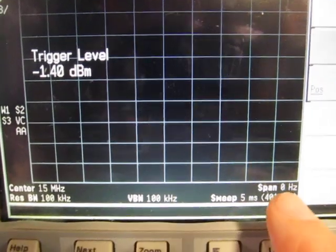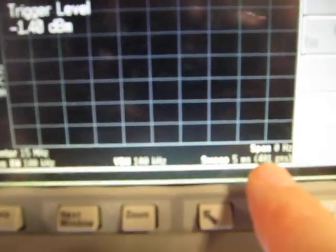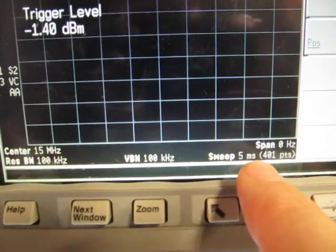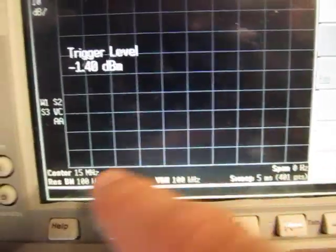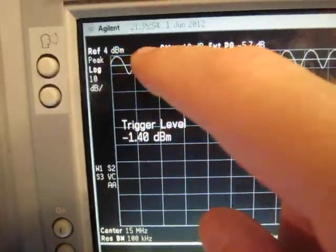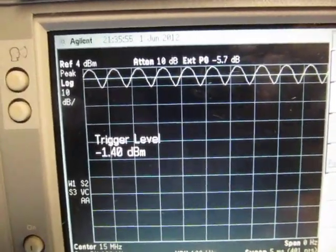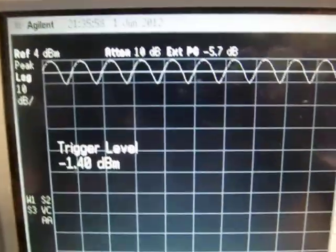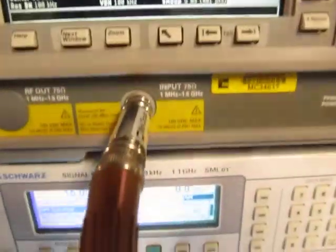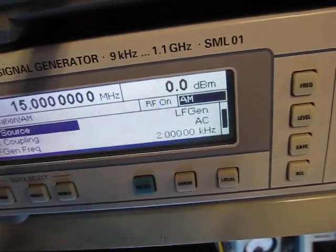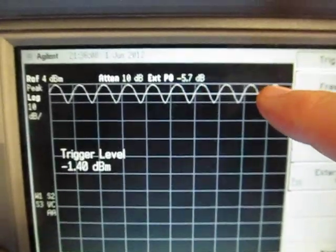The horizontal axis here is now, instead of frequency, is now time. And I've got a 5 millisecond total time here or 500 microseconds per division. Again, you can kind of see the period of that signal is at 500 microseconds. But you might look at this and say, well, that doesn't look sinusoidal. I know that the signal I'm modulating with here is a 2 kilohertz sine wave. Why isn't that sinusoidal?